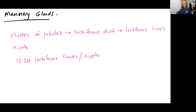Mammary glands are composed of clusters called lobules — they look like little bunches of grapes — and each feeds into a lactiferous duct, which empties into a larger space called the lactiferous sinus. The lactiferous sinus then empties milk to the surface of the nipple. The nipple contains several openings because you can have 15 to 20 lactiferous sinuses per nipple — so it's not like a hose with one opening, but more like a little sprinkler system releasing milk.